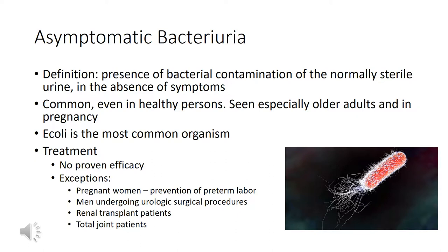For treating asymptomatic bacteriuria in pregnant women, the standard course is a 10 to 14 day course of ampicillin or cephalosporins, which are both generally safe and effective during any phase of pregnancy. If patients are having persistent bacteriuria, they should be treated with suppressive therapy for the remainder of their pregnancy.